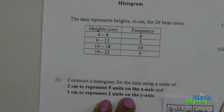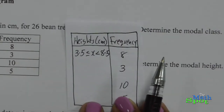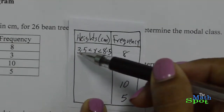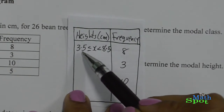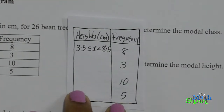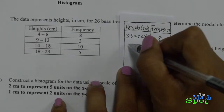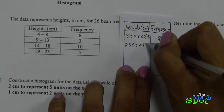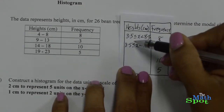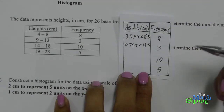Before drawing the histogram, we need to remember that each interval represents a range of values. For the first interval: 3.5 ≤ x < 8.5. For the second interval: 8.5 ≤ x < 13.5. Notice that we're using the boundaries — the lower class boundaries and the upper class boundaries for the respective intervals.